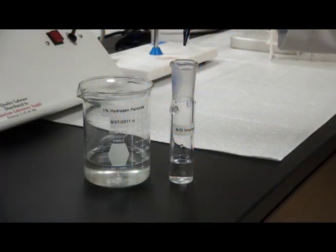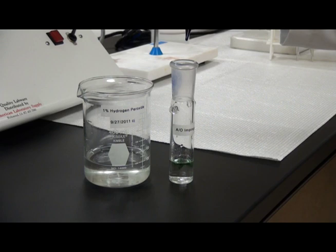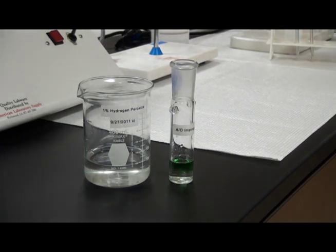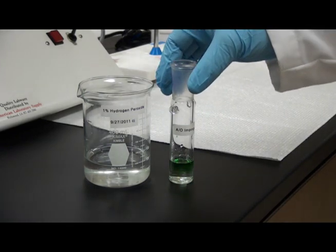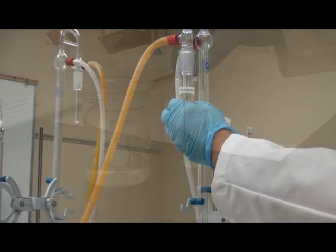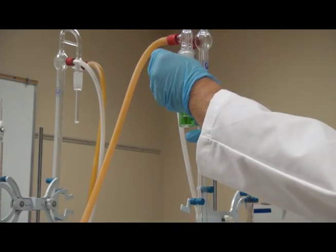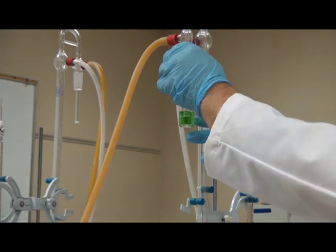Prepare a second impinger tube filled to the 10 ml mark with a 1% hydrogen peroxide solution. Add three drops of SO2 indicator. The liquid should change to the gray-green color. Secure the impinger tube onto the apparatus with the impinger tube fully seated in the spring holders attached to the glass ears.